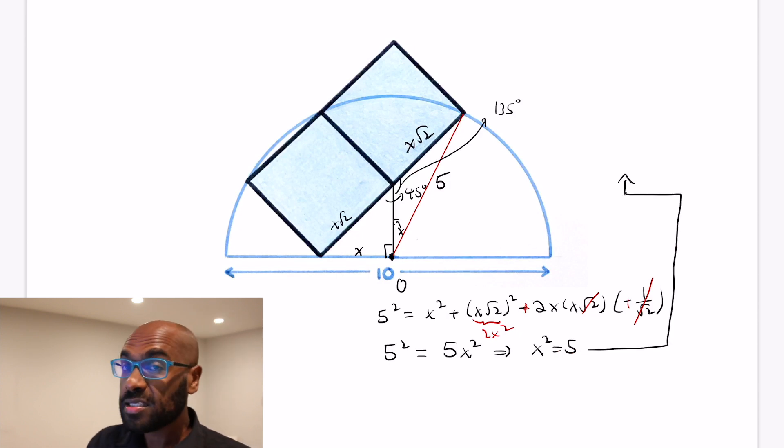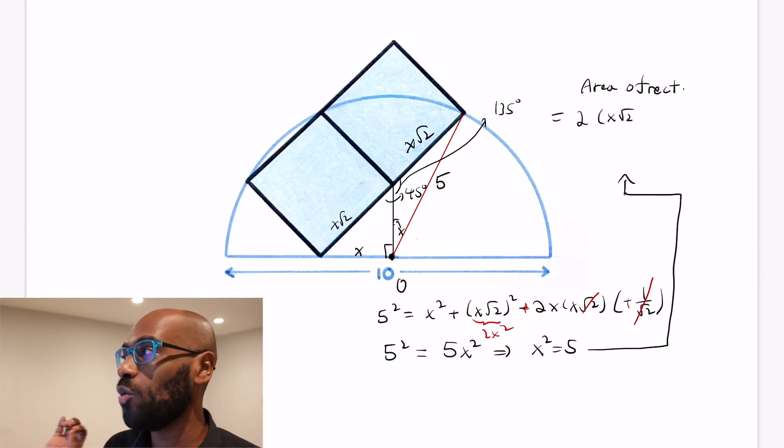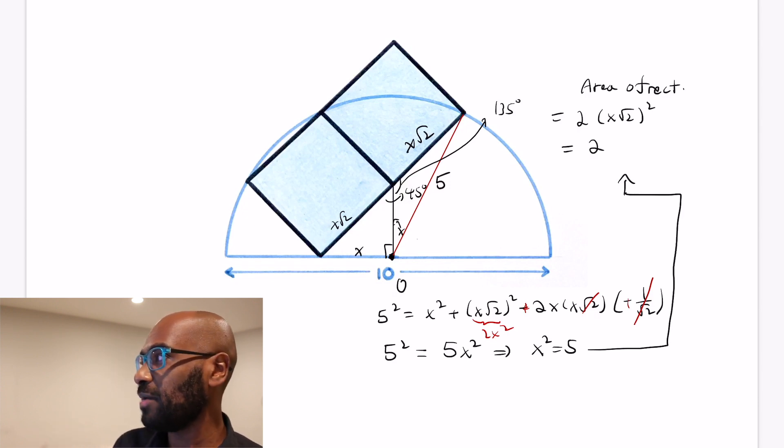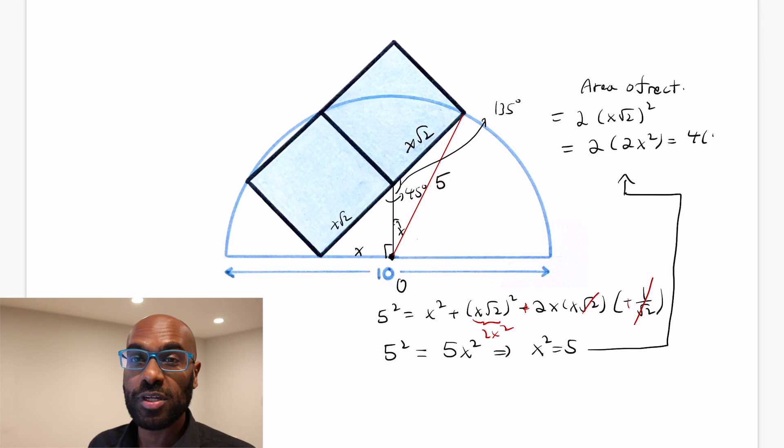And so this x squared itself is actually 5. Now this x is different than x we had before. The side length of the squares are x root 2. So the area of the entire rectangle is twice the area of one of these, which is twice the quantity x root 2 all squared. And that gives us a total of 2 times 2x squared, which is 4 times the quantity x squared. We figured out x squared is 5. So again, we get that the area is 20.